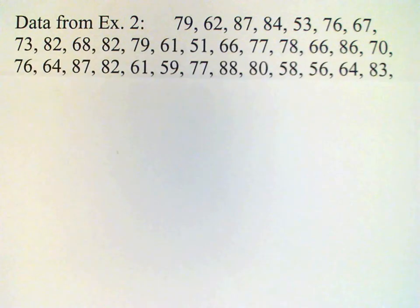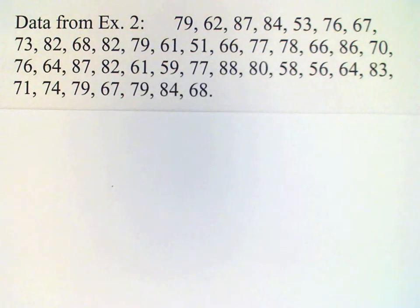So for example, we have 40 people who take a test, and the scores for that test are given in this list here. 79, 62, 87, 84, 53, and so on.